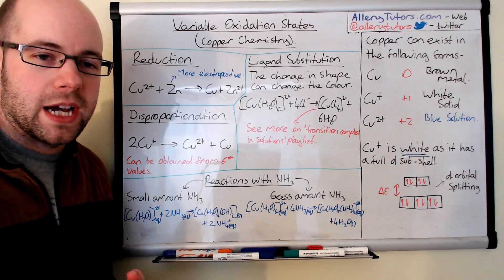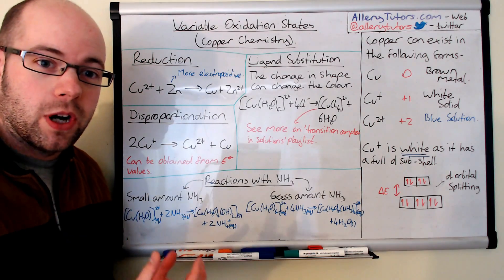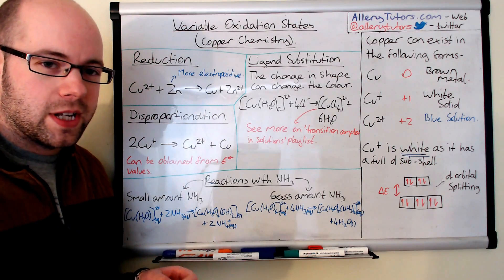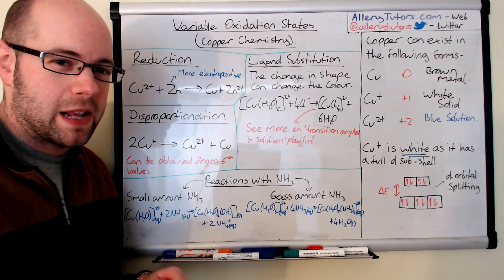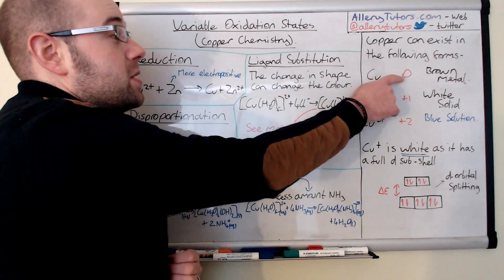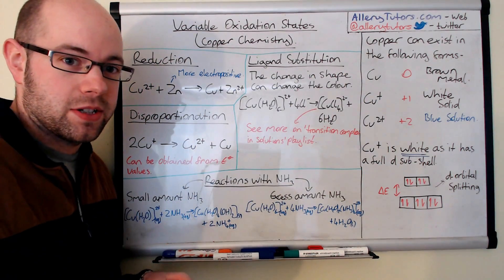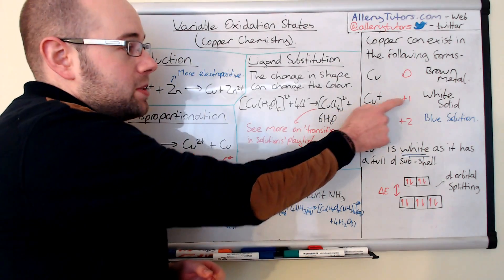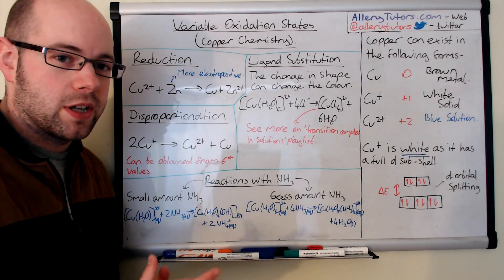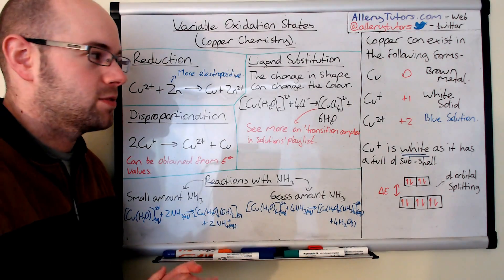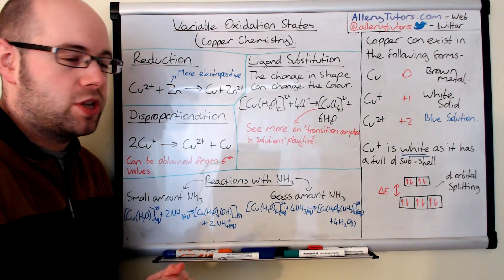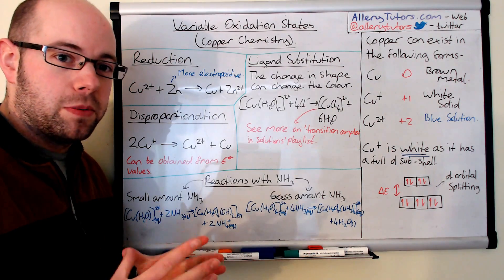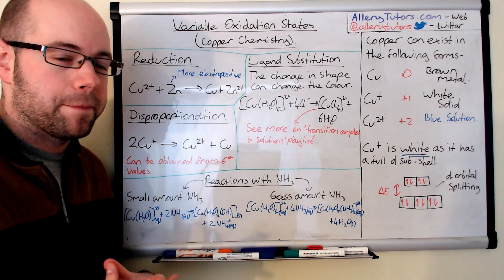We're going to look at the different forms that copper can exist in. Now copper can exist as a metal, which is like a brown shiny metal. When in powder form it's pink, but obviously as an element it has an oxidation state of zero. We're also going to look at copper one plus, which is a white solid, and I'll come on to why it's white in a minute as well. And we're going to look at copper two plus, which has an oxidation state of plus two and it's normally a blue solution when dissolved in water.